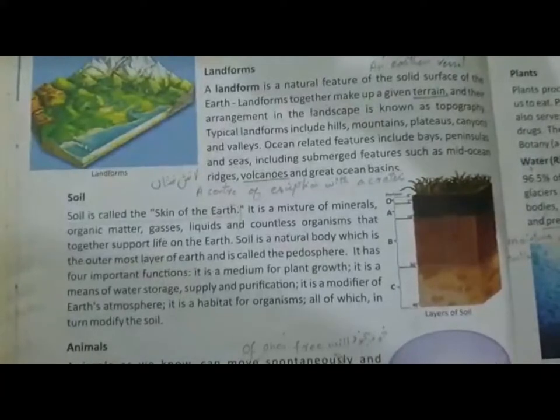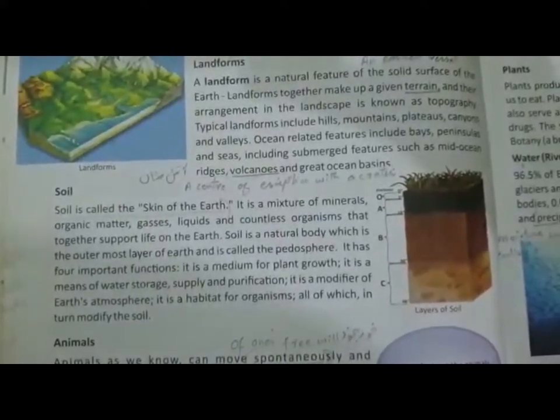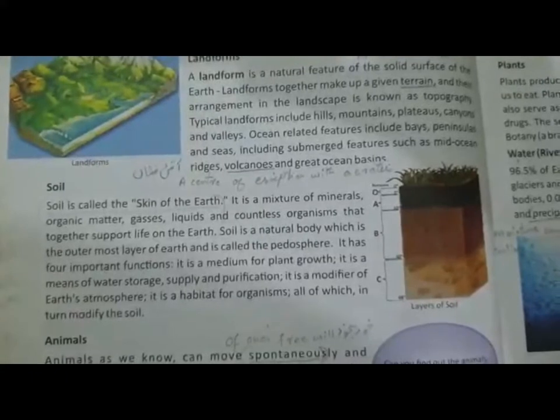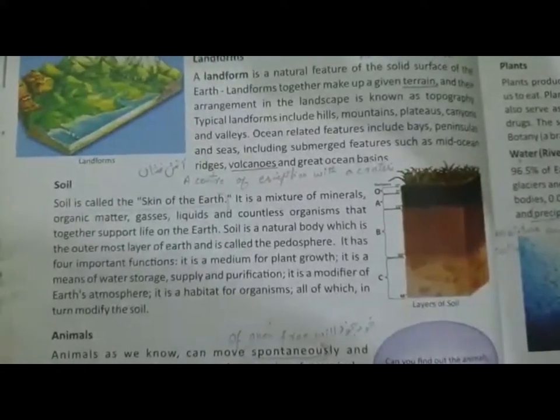After oceans, the next physical feature we will study is soil. Soil is called the skin of the earth because the earth is covered by soil all around — under the ocean and on top of the lithosphere. What is soil? Soil is a mixture of minerals, organic matter, gases, liquids, and countless organisms — tiny microorganisms that are not even visible to the eye. Soil is the outermost layer of the earth, and it is also called the pedosphere.